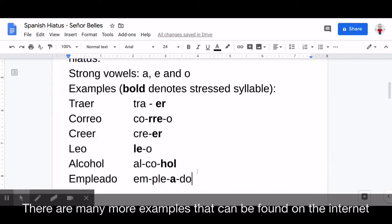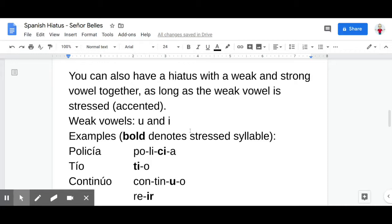Now, you can also have a hiatus with a strong and a weak vowel together, so long as the weak vowel is stressed or has an accent mark on it. So the weak vowels are U and I. So what I've got here for you are five more words, and over here is how they're spelled along with the accent mark on that weak vowel, and over here is how the syllables will be broken up.